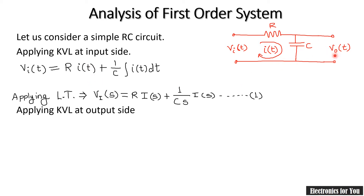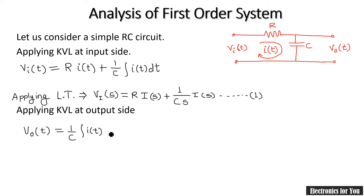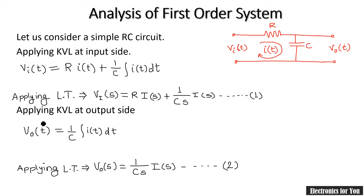Applying KVL at the output side: the output Vo(t) equals the voltage across the capacitor, which is 1/C times the integral of I(t) dt. Taking the Laplace transform, Vo(s) equals I(s)/(Cs). This is equation number 2.